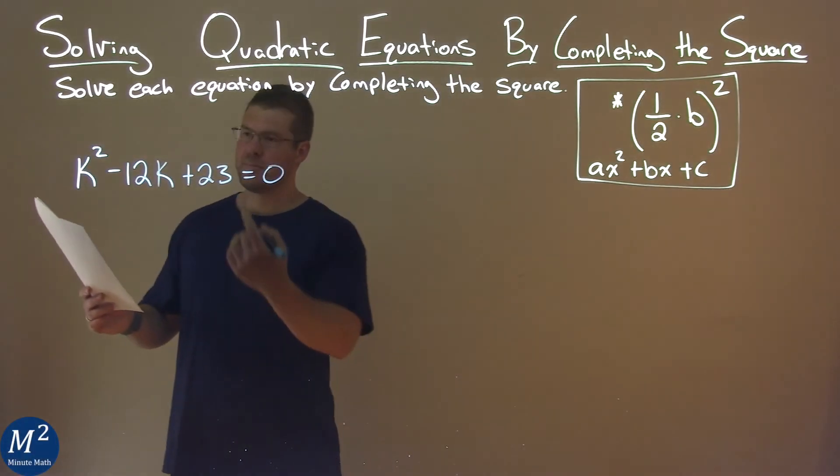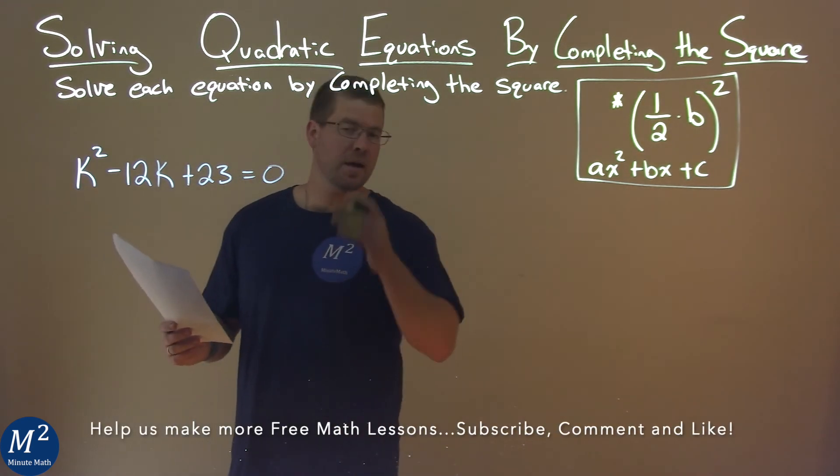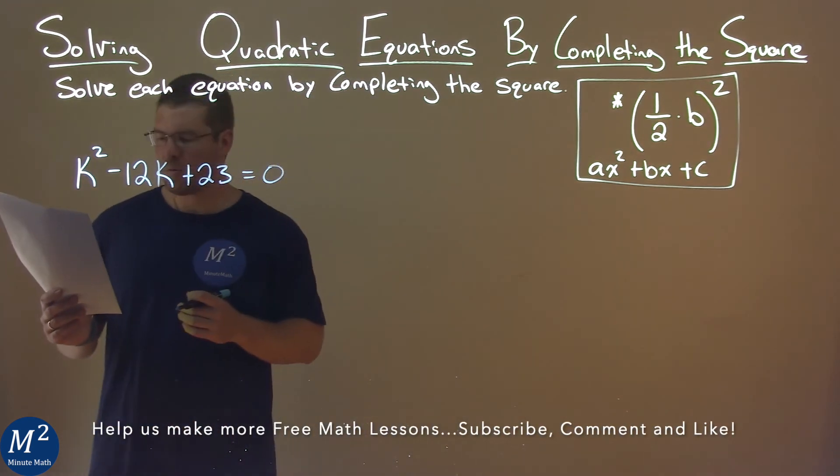We're given this problem right here, k squared minus 12k plus 23 equals 0, and we need to solve this by completing the square.